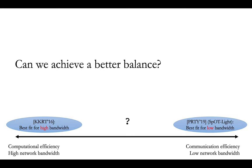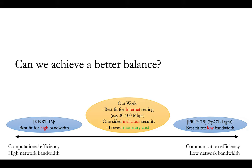In this work, we asked the question whether we can achieve a better balance between computation and communication, and here is what we achieved. First, we construct a new PSI protocol that achieves a better balance between computation and communication, so it is the best fit for the internet setting, where the network bandwidth is not too high and not too low. For example, between 30 and 100 megabits per second, our protocol is the most efficient. Second, our PSI protocol is semi-honest secure, but we can actually prove it's maliciously secure against one party almost for free. And finally, our protocol also achieves the lowest monetary cost compared to existing works in a lot of real-world scenarios.